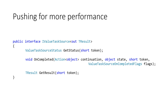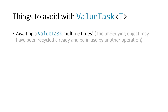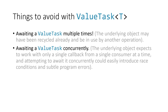Now let's see what we should avoid when using ValueTask. We cannot await a ValueTask multiple times, because the underlying object may have been recycled and used in other operations — remember, a Task can be used multiple times, but ValueTask cannot. We also cannot await a ValueTask concurrently, because the underlying object expects to work with only a single consumer at a time, and attempting concurrent awaits could easily introduce race conditions and subtle program errors.